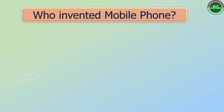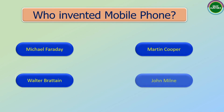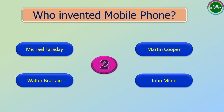Next question: Who invented the mobile phone? The options are: Michael Faraday, Martin Cooper, Walter Bratton, and John Milne. The correct answer is Martin Cooper.